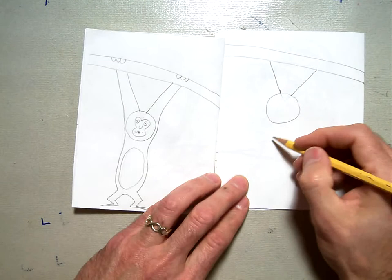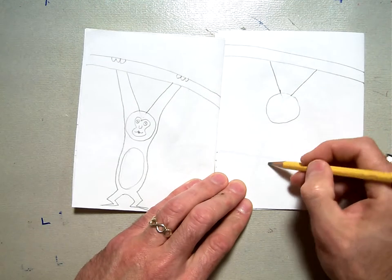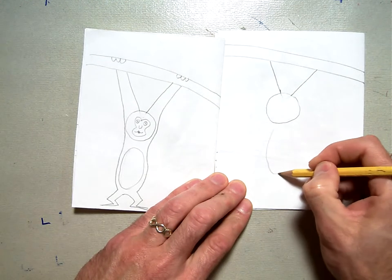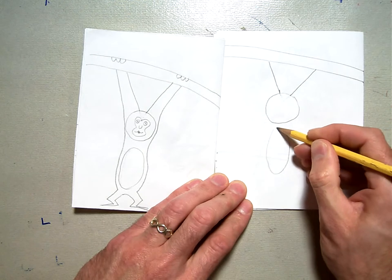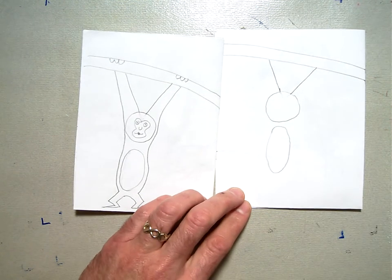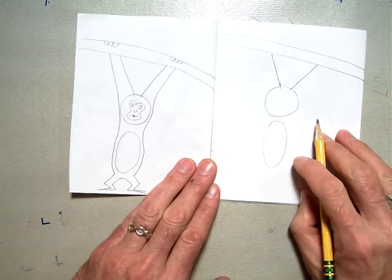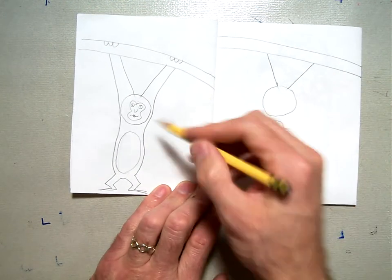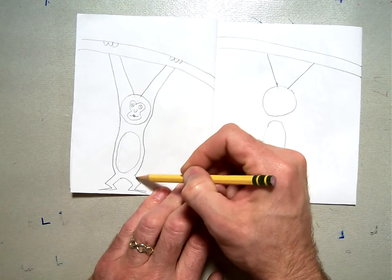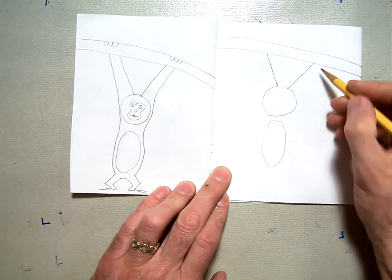Then we're going to draw an oval underneath that circle like that for his belly. Then we're going to draw one line from the top all the way down. And this is going to be this line right here around his belly and down into his feet.